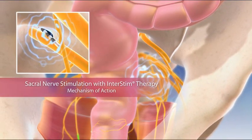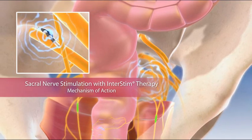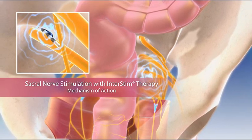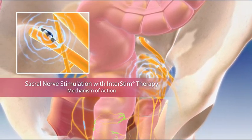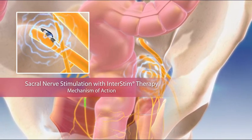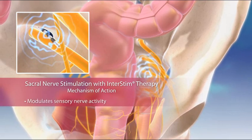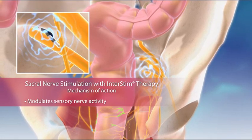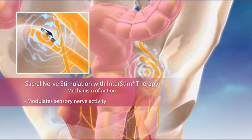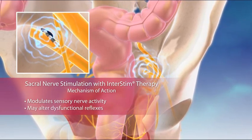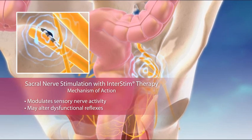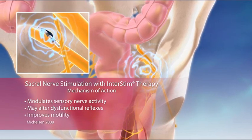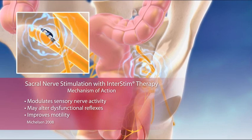Although the precise mechanism of action for sacral nerve stimulation remains unclear, substantial evidence from clinical studies, including randomized controlled trials, demonstrates that InterStim therapy greatly improves continence and quality of life. One potential mechanism involves a neuromodulation effect on the pre-existing activity in sensory fiber pathways that control muscular function. The result may be the activation or inhibition of adjacent neurons, which alter the dysfunctional neural reflexes of the pelvic structures, potentially explaining the associated moderate increase in external anal sphincter squeeze pressure and improvement in motility.